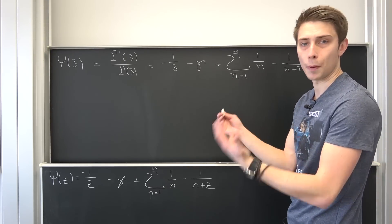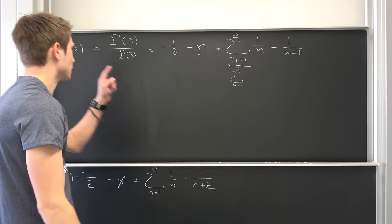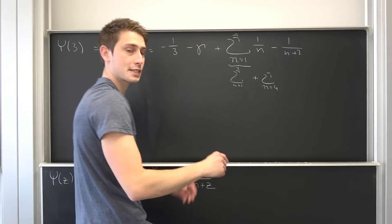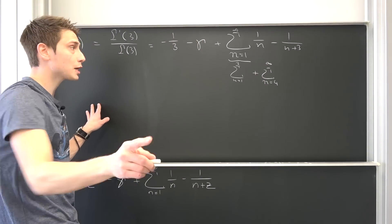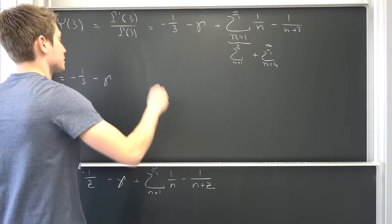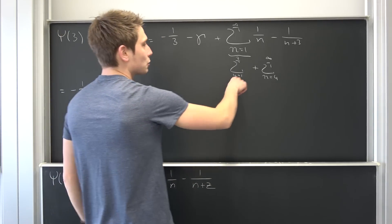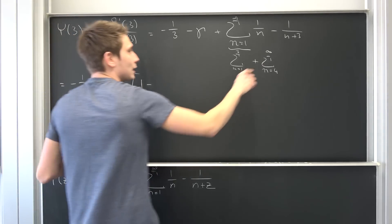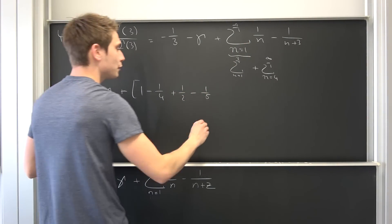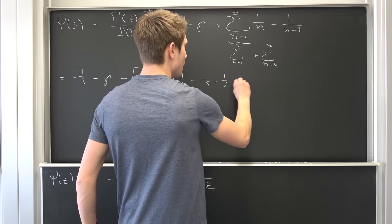Here's the basic strategy: we are going to break this sum up into partial sums — a sum running from n equals one to our set value plugged in, plus a sum running from z plus one (n equals four in this case) to infinity. We break it up this way and write stuff out. So we have minus one third, minus the Euler-Mascheroni constant, plus: one minus one quarter, plus one half minus one fifth, plus one third — that's the highest point of our partial sum — minus one sixth.